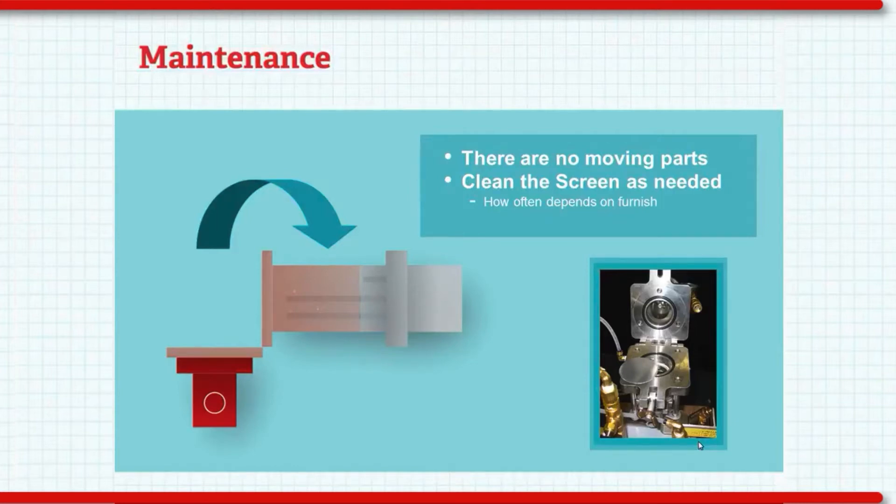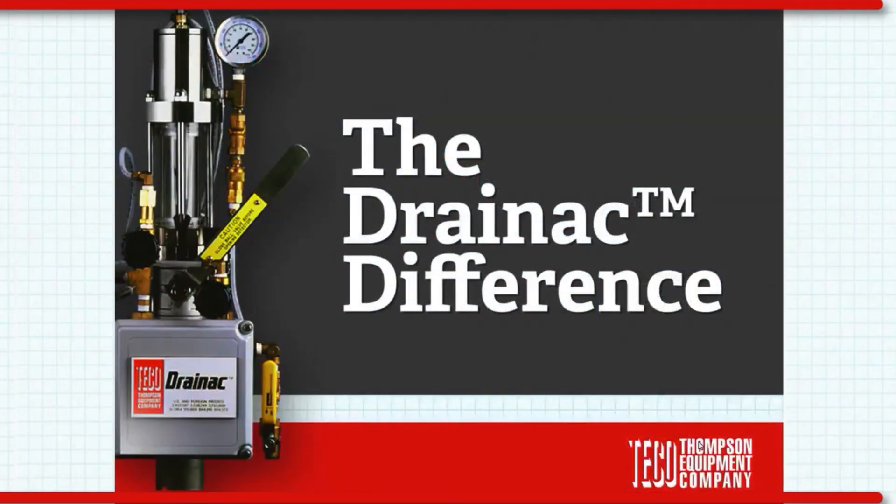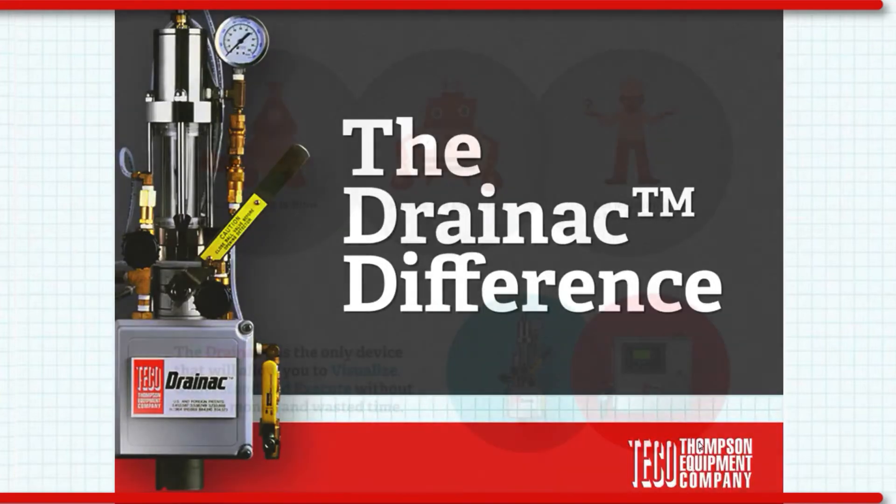About once a year, you'll need to replace certain consumables in the system. Now the Draenec isn't the only way to measure freeness out there, but it frankly blows the alternatives out of the water.